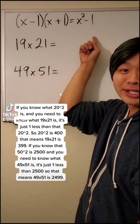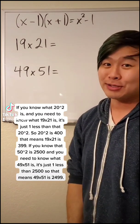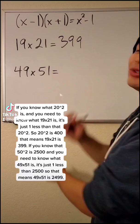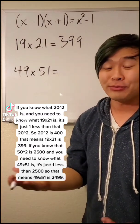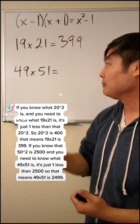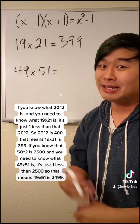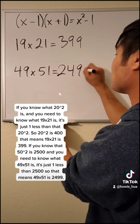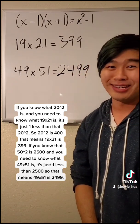We are going to look at how difference of squares can make multiplication easier for us. Difference of squares can be rewritten as what's seen on the left. Here are a couple examples to see how we can use this to our advantage. If you know what 20 squared is, and you need to know what 19 times 21 is, it's just 1 less than that 20 squared.